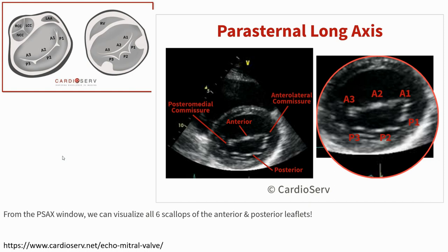On this view, on the left side of the mitral valve we call the posterior medial commissure. In the middle in the anterior we call the anterior portion. On the right side of the mitral valve we call the anterolateral commissure, and the posterior portion. We can divide the anterior portion: from the lateral we call A1, the middle we call A2, and the medial portion we call A3. In the posterior, the lateral we call P1, middle we call P2, and the medial we call P3.